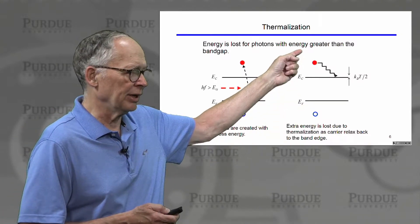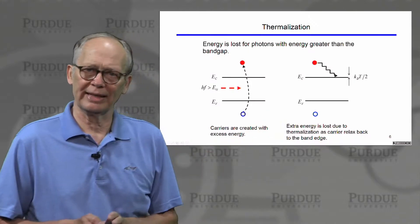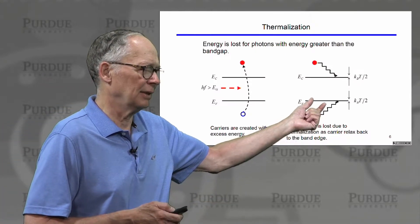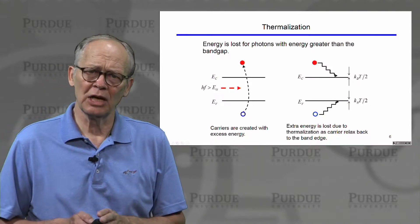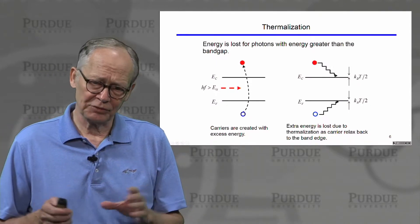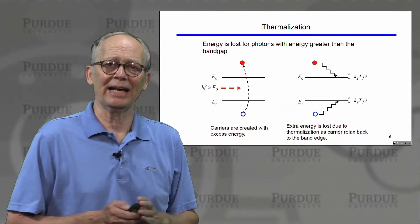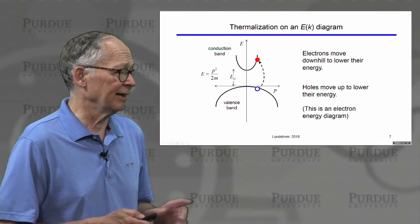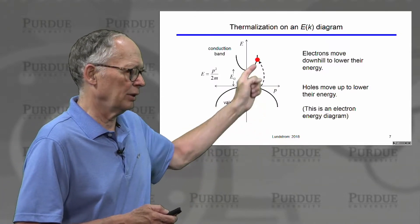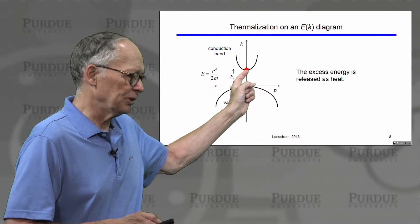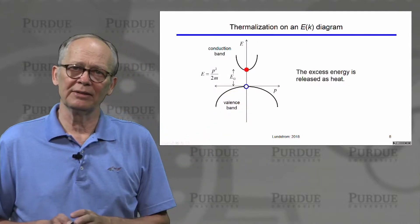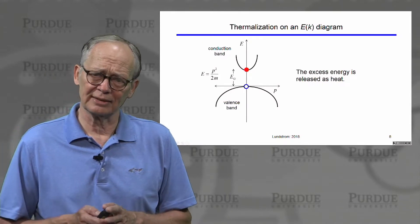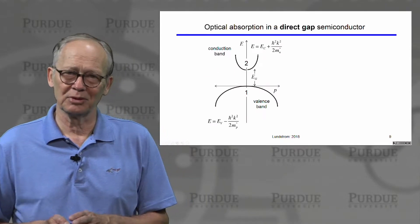Hole energy goes down on these plots. This hole with excess energy will dissipate that energy and end up near the top of the valence band. This process is called thermalization — it happens very quickly. Afterward, the electrons and holes are near the edges of the bands, just as we typically assume. On the energy band diagram, the excited hole and electron flow down their respective potential energies to the minimum energy at the band edges. This excess energy released during thermalization is typically released as heat — an undesirable side effect, energy that is simply wasted.